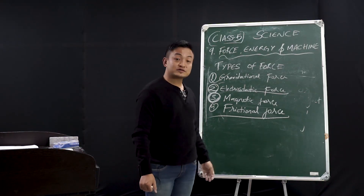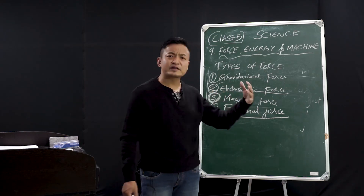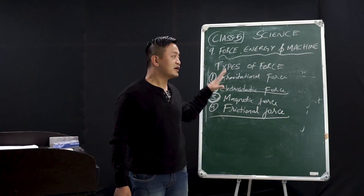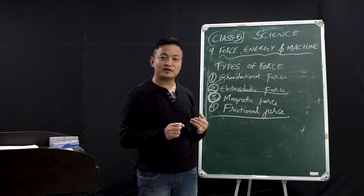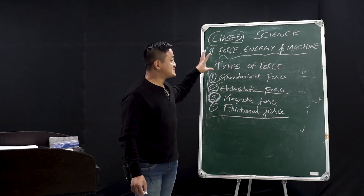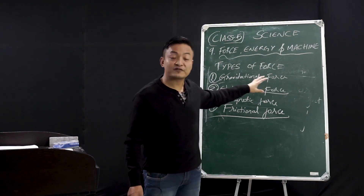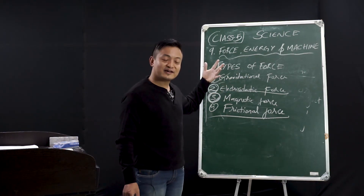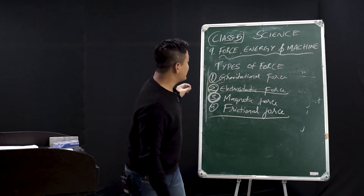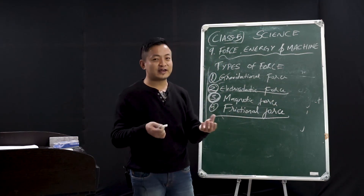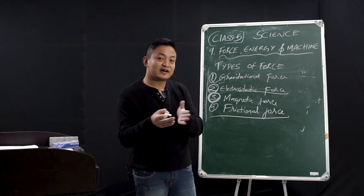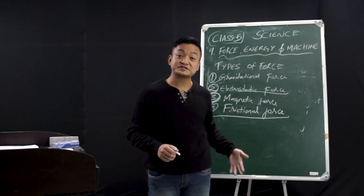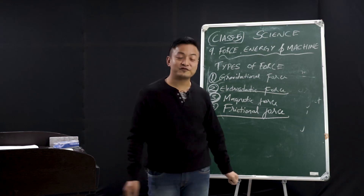These are the four types of force. In your exercise, write the different types of force and the effects of force — I'm sure class 5 students will be able to write that. Home assignment: write the effects of force. Also write the types: gravitational force, electrostatic force, magnetic force — you can perform the magnet and iron activity at home — and frictional force, which you can observe simply by walking.